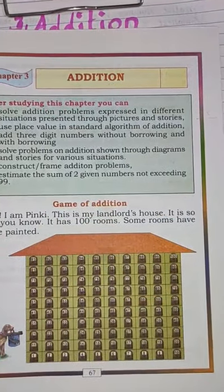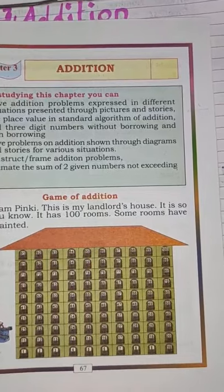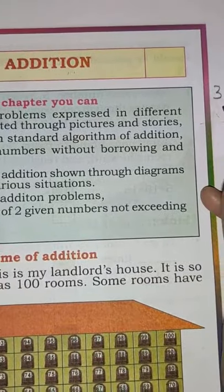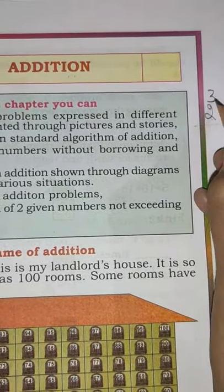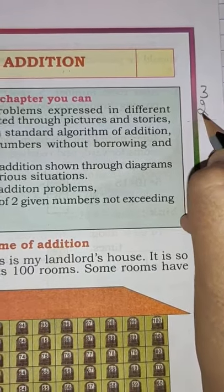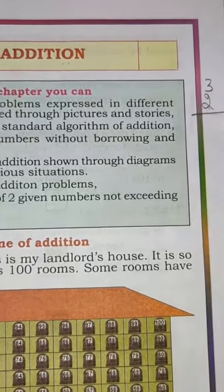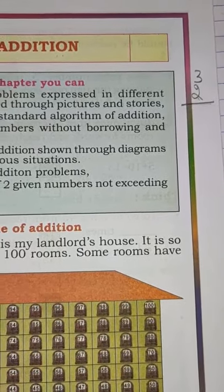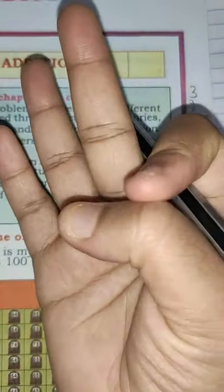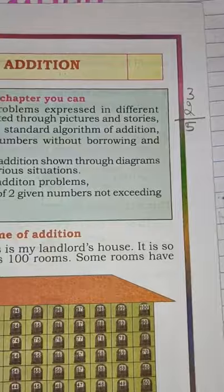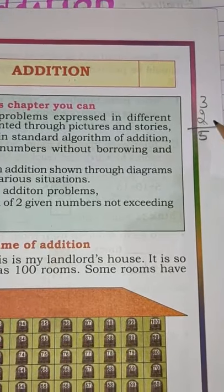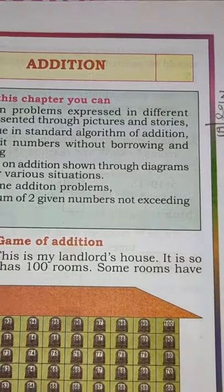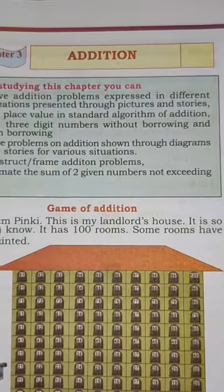Now you tell me what is the meaning of addition. Addition means the act of adding anything. Suppose you are having 3 chocolates with you, and now I am giving you 2 more chocolates. Now how many chocolates do you have? You count: 3, 4, 5. Yes, now you are having 5 chocolates. So what we have done here? We have added the number of chocolates. So this is addition.